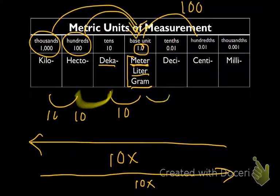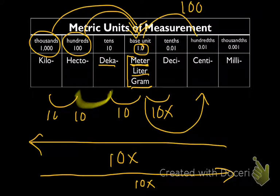A decimeter is to the right of a meter. It is 10 times smaller than a meter. A centiliter is going to be 100 times smaller than a liter because it's two spaces over, and so on and so forth.